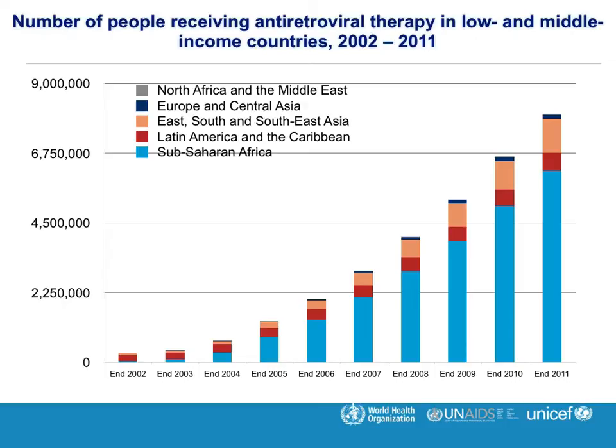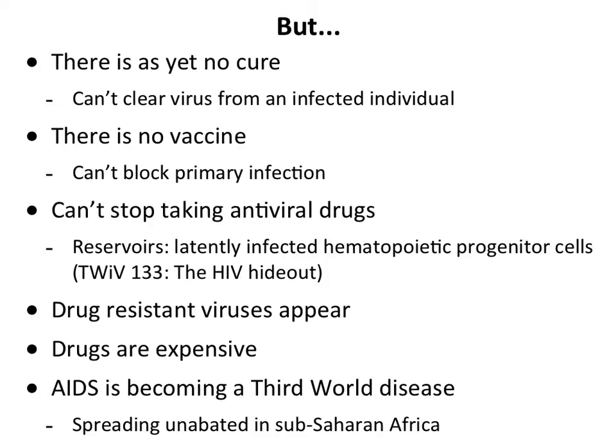The number of people receiving antiretroviral therapy in low- and middle-income countries grew from very few in 2002 to a much better level by 2011, but it's still not enough. The Gates Foundation is doing a lot in this area. But you can't cure this infection: it makes a provirus that integrates into your genome in cells that live for a long time. You can only suppress it - you have to take the drugs your whole life. There's no vaccine yet, though many people are working on it.